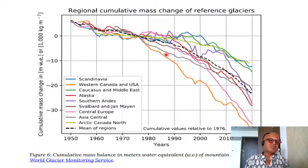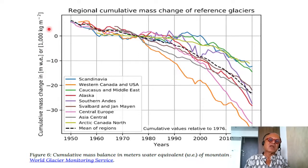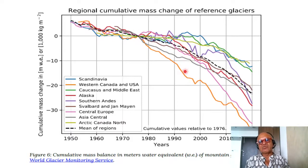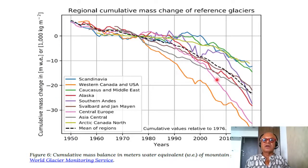These are cumulative mass changes in meters of water equivalent, or 1,000 kilograms per meter squared. Looking at cumulative mass balance of mountain glaciers across the world — from Scandinavia, Canada, Caucasus, Alaska, Arctic Canadian region, to Asian Central region. All of them are tending downward at different rates. Western Canada and the U.S. is crashing at quite a fast rate; the Central European one has become faster more recently. The bad news is all of them are losing mass.